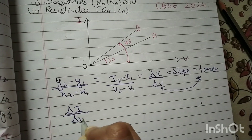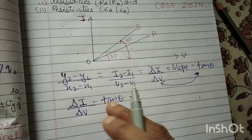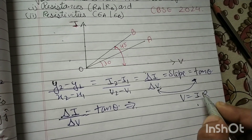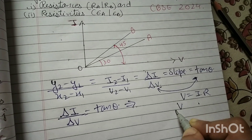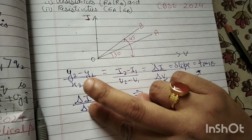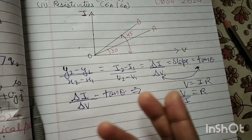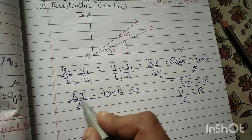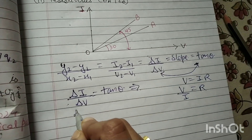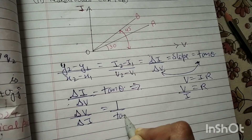So delta i upon delta v is equal to tan theta. By Ohm's law, V equals IR, so R equals V upon I. If we take the reciprocal, we get delta v by delta i. And reversing delta i upon delta v gives us 1 upon tan theta.